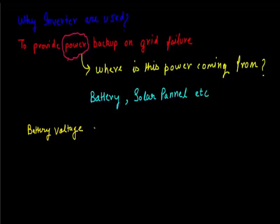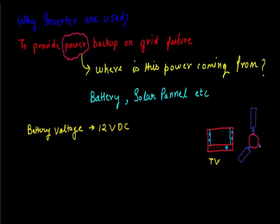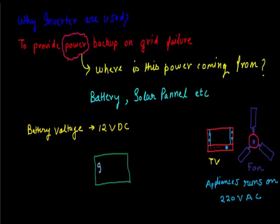In general the battery voltage is around 12 volt DC and the appliances that are used in our homes like TV, fans, refrigerator use 220 volt AC. In some countries like United States it is 110 volt AC. Now we have to design a circuit which can convert this 12 volt DC to 220 volt AC as described in this figure.